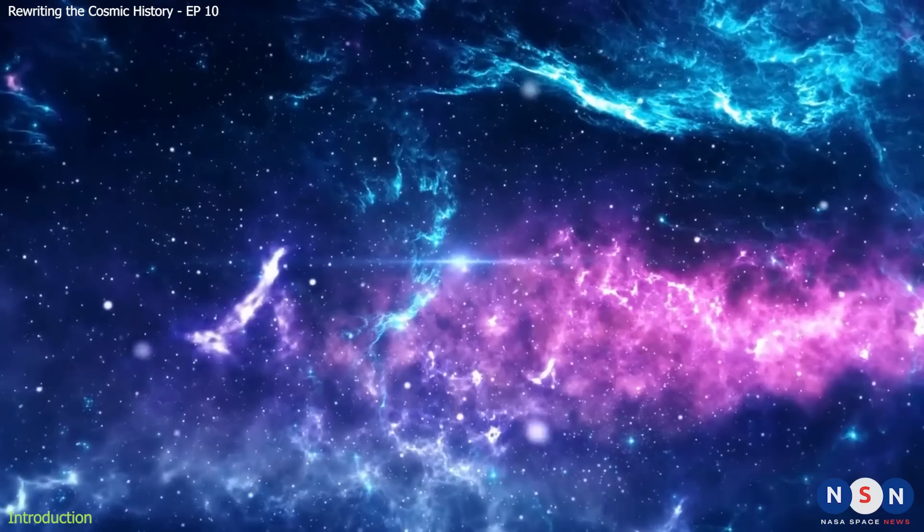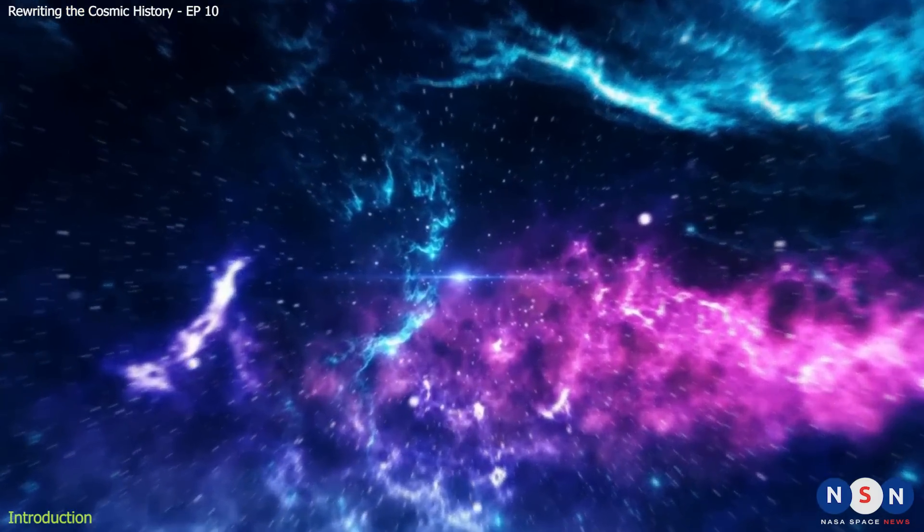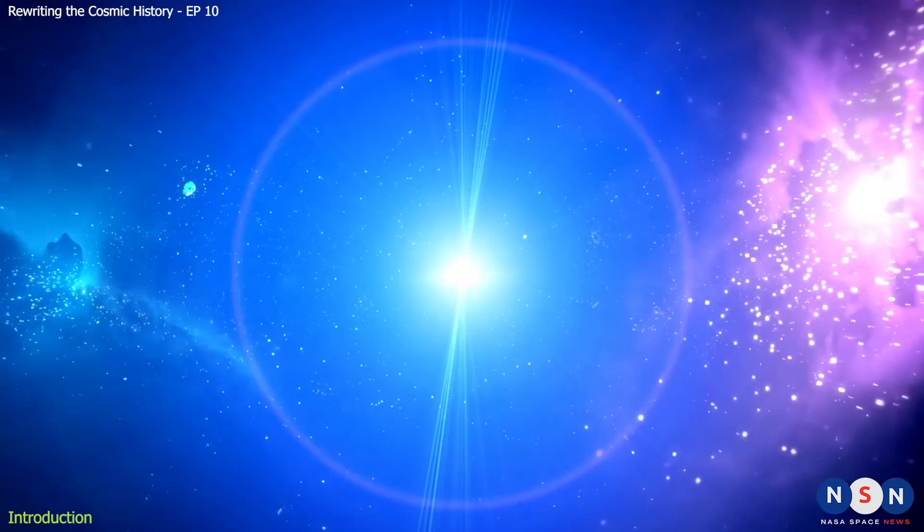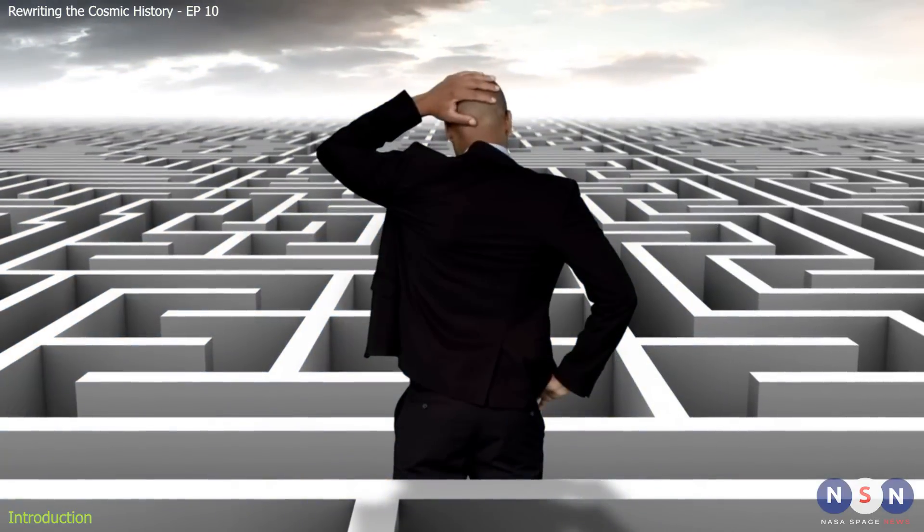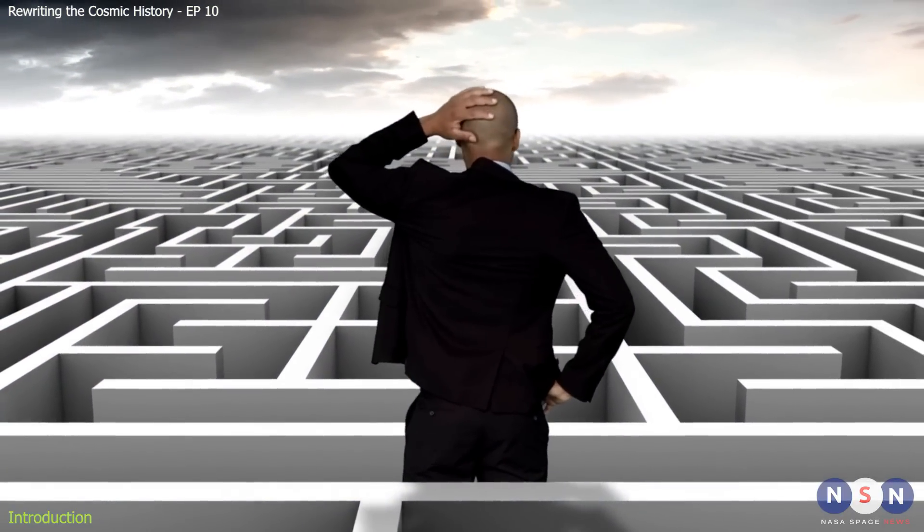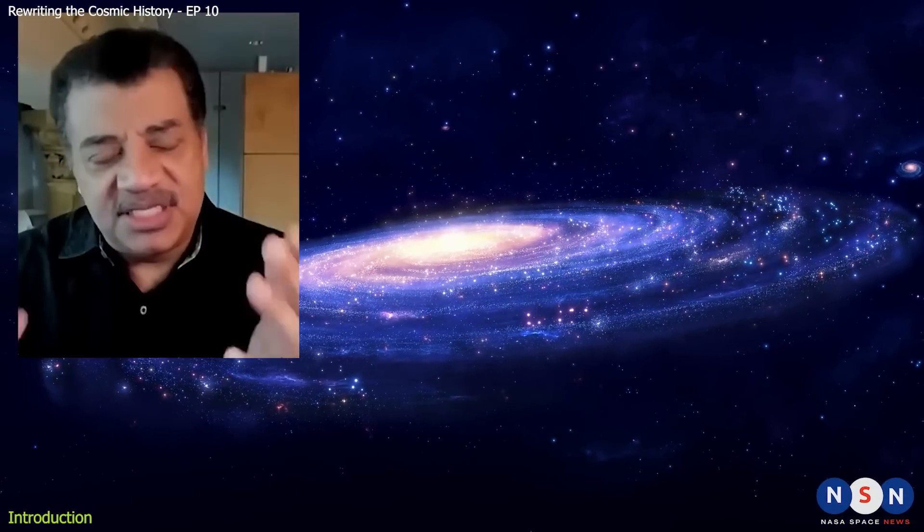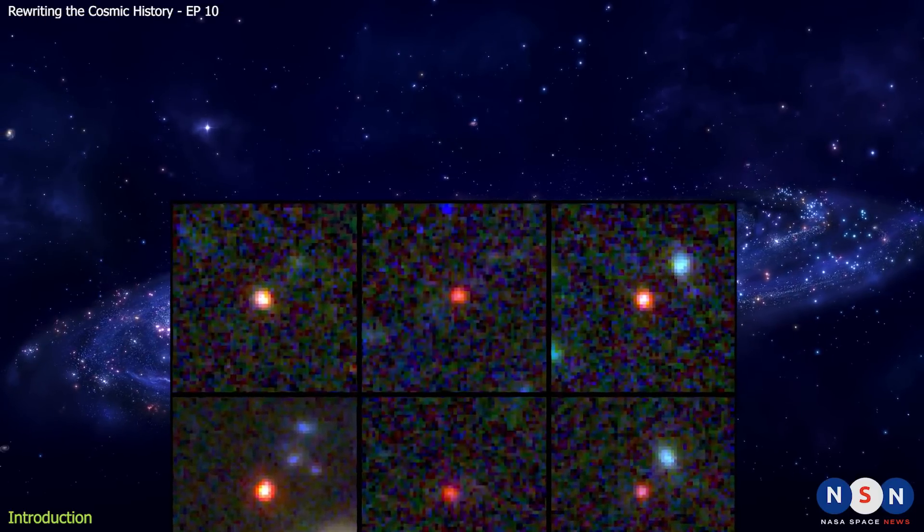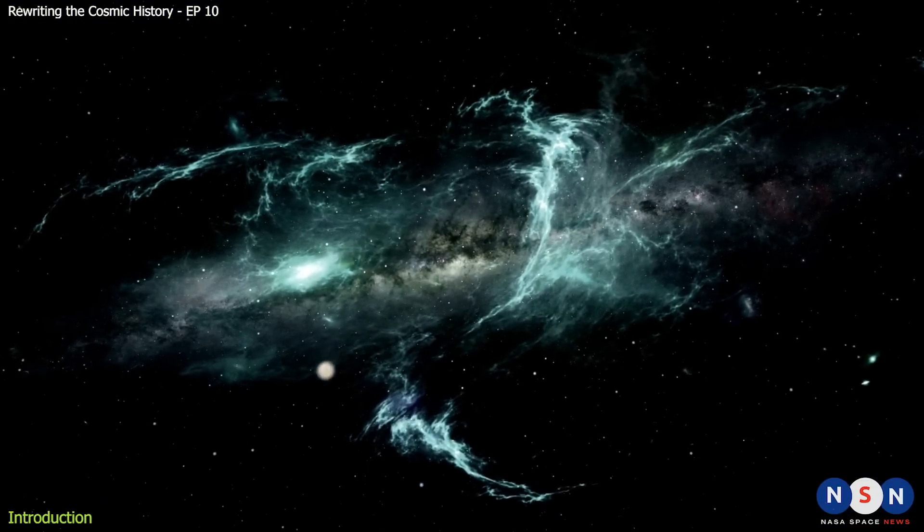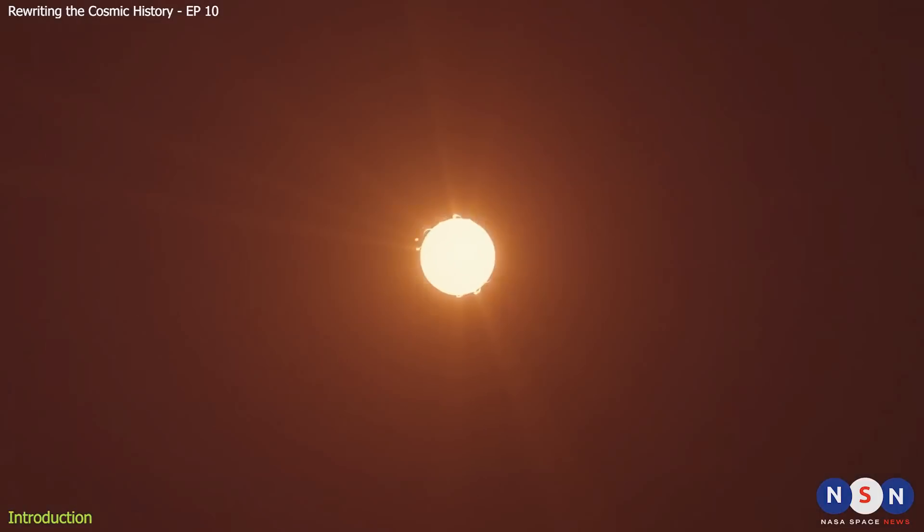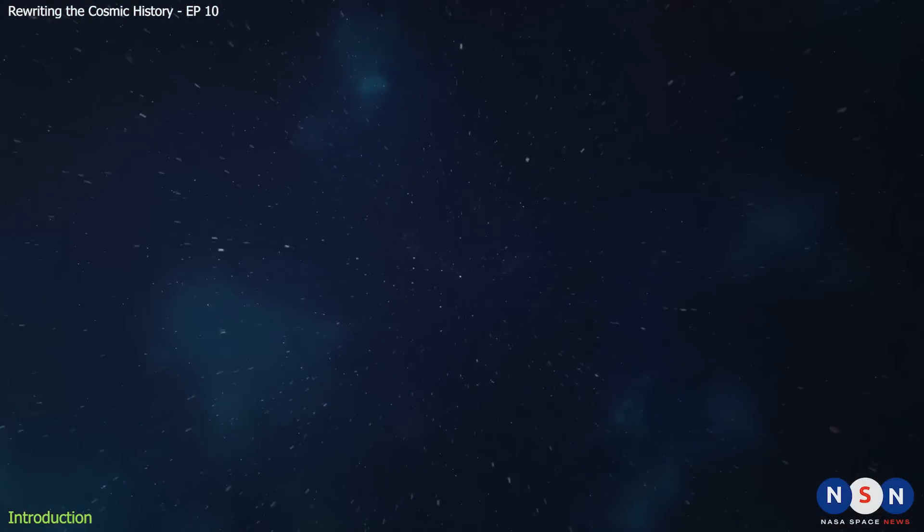They are so massive that they contain billions of stars like our sun. But how did they form so quickly after the Big Bang? How did they grow so large in such a short time? These are some of the questions that puzzle scientists and astronomers who study the early universe. You just heard some of them, like Neil deGrasse Tyson and Michio Kaku, who have talked about these galaxies and suggested some possible explanations for their existence. But none of these explanations are satisfactory or conclusive.